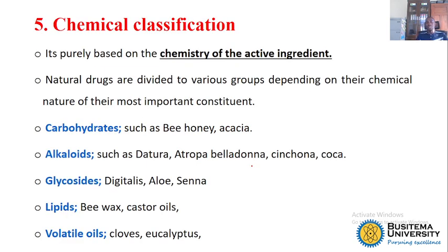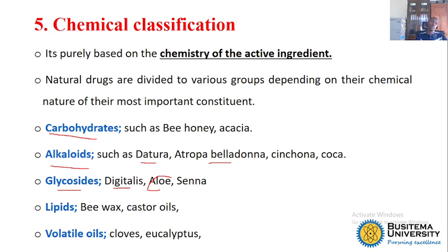The fifth way to classify natural drugs is chemical classification, where we depend on the active ingredient that a particular drug contains. In this way we have carbohydrates — for example, bee honey, which contains carbohydrates. We have alkaloids — for example, Atropa belladonna, Datura stramonium which is Sodom apple, and cinchona, which all contain alkaloids. We have aloe vera and Digitalis from digitaria, which contain glycosides. We have beeswax, which contains many lipids. Then we have eucalyptus, which contains volatile oils.